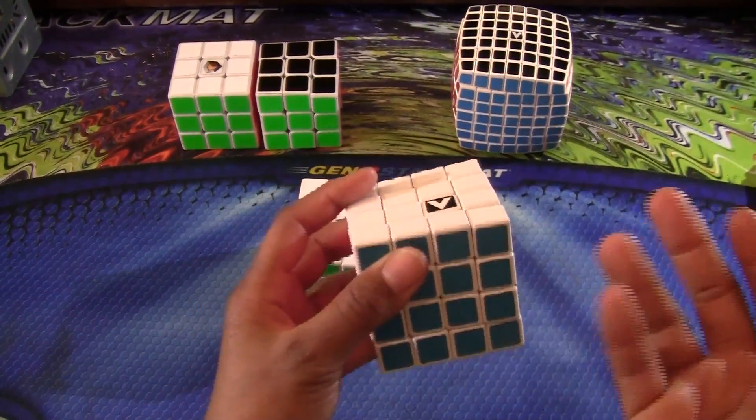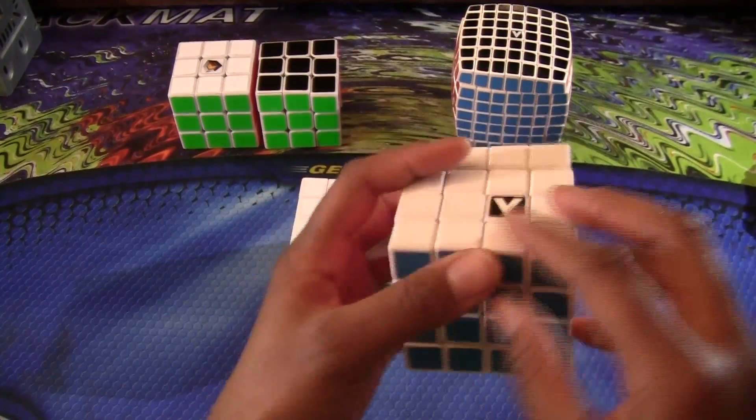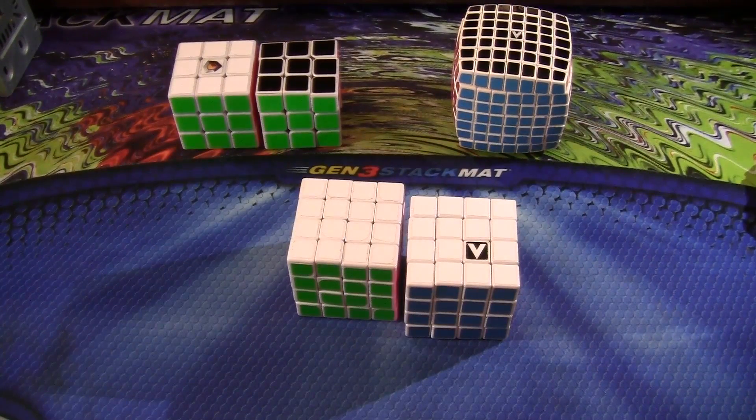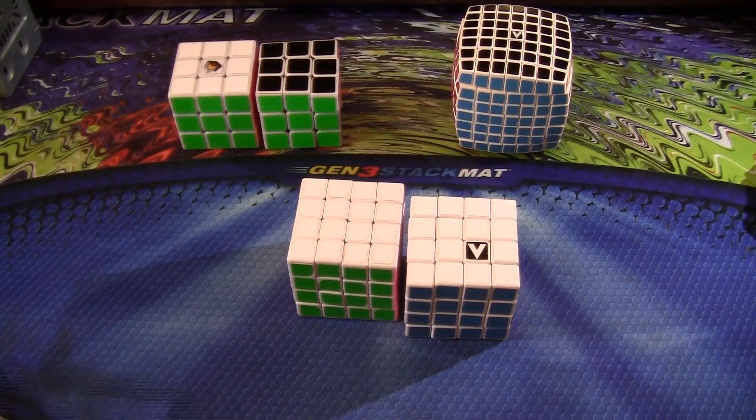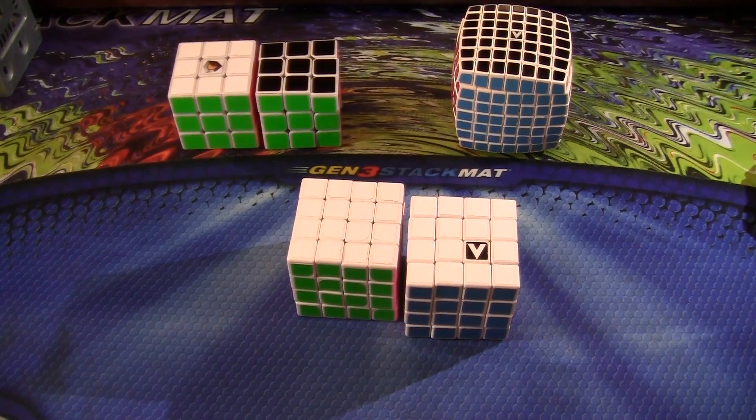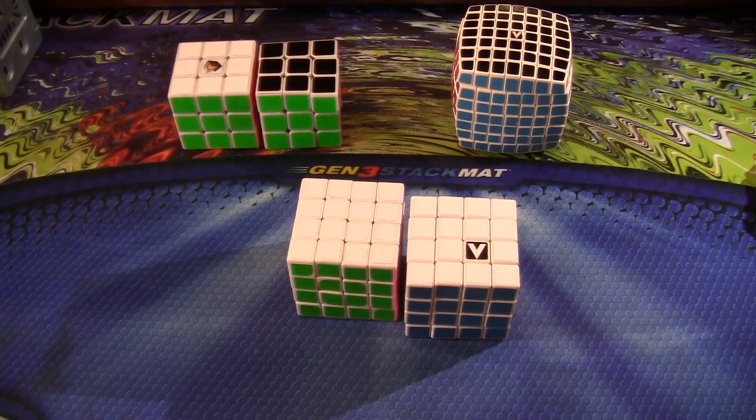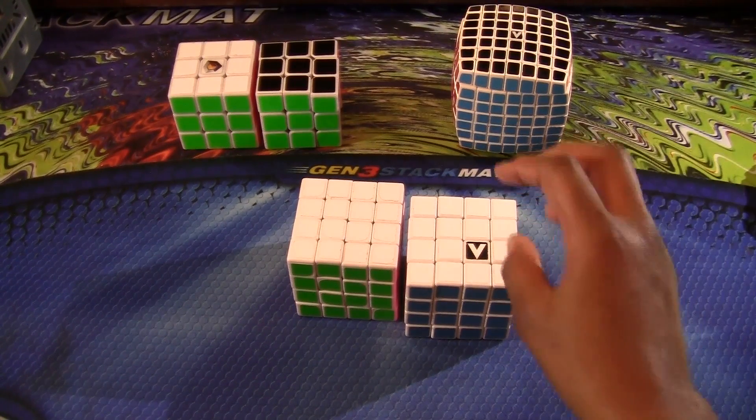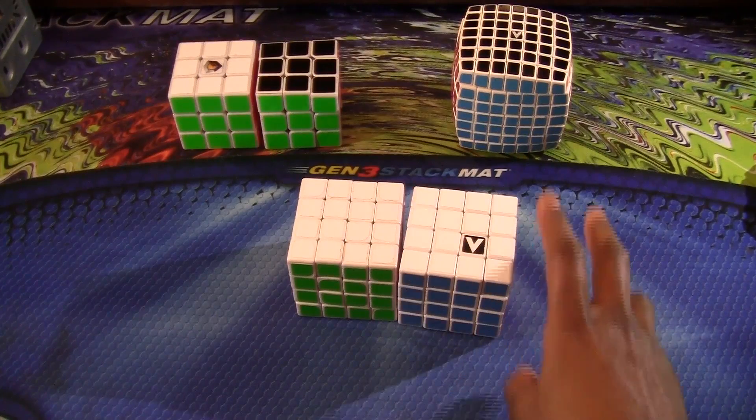Because when I disassembled this, I noticed there was no extra flash on the pieces. And everything was just fine. So he doesn't like his, but I like mine. He got a DIY and I got an assembled. So just based on that, I'm just going to say get the assembled. You're safer by getting the assembled version.